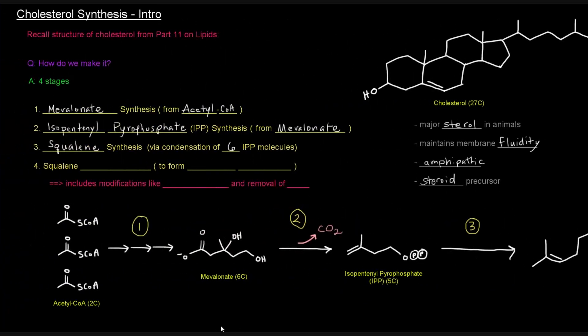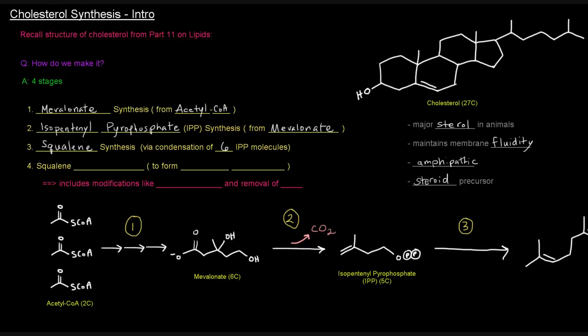Stage four, the last stage, is called squalene cyclization. And that's when we're actually going to form the steroid nucleus, that is, those four rings, right? The steroid nucleus, the A, B, C, and D rings in cholesterol. And in that fourth stage, we're also going to be, this is going to include the modifications like oxidation, as well as the removal of the three carbons, because cholesterol has 27 carbons, as you see here, whereas squalene has 30.